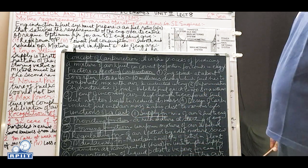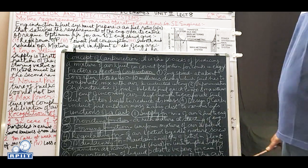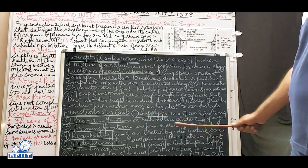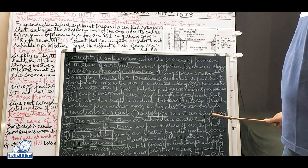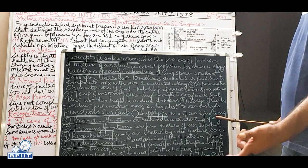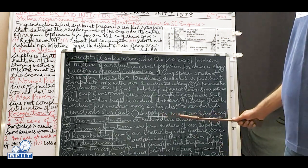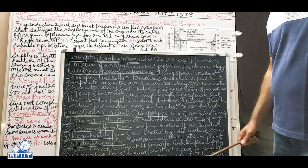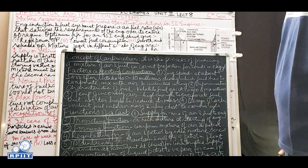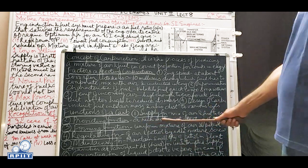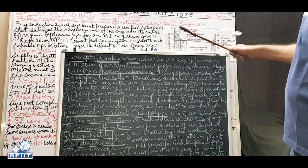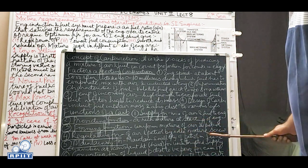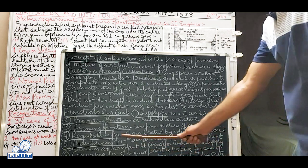Functions of a carburetor - there are six functions. First: supply function - to supply a mix of air and fuel to the inlet manifold and through the inlet valve to the engine cylinder. Second: providing function - providing a rich mixture at engine starting and idling.